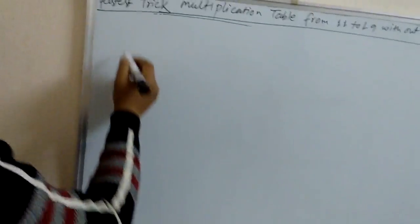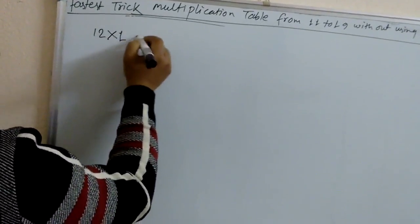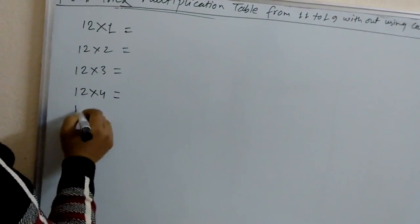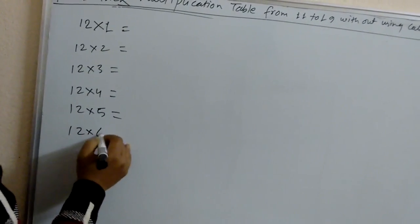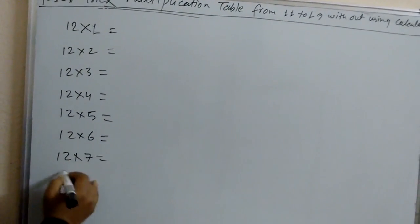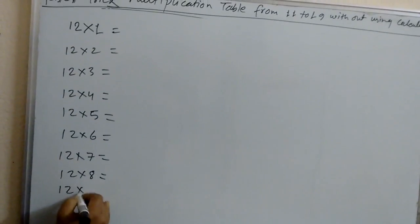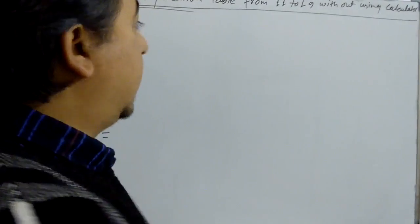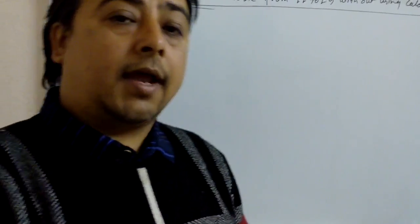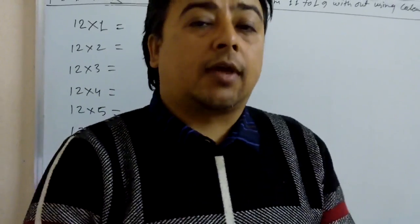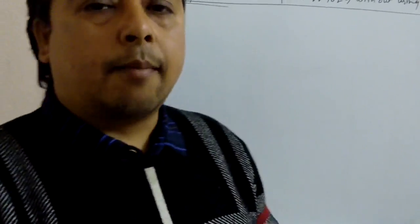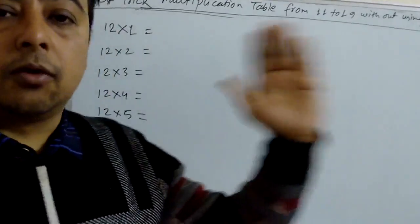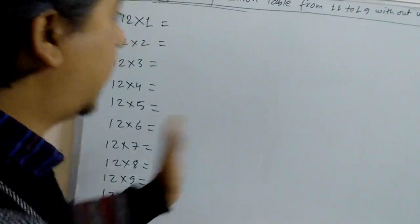Let's start. First we start from 12: 12×1, 12×2, 12×3, 12×4, 12×5, 12×6, 12×7, 12×8, 12×9, 12×10. For this, you have to know the table from 1 to 9. If you know the table from 1 to 9, easily you can know the table of 11 to 19 using the same method. For 12, you have to know the table of 2. For 13, the table of 3. For 14, the table of 4 — like that.